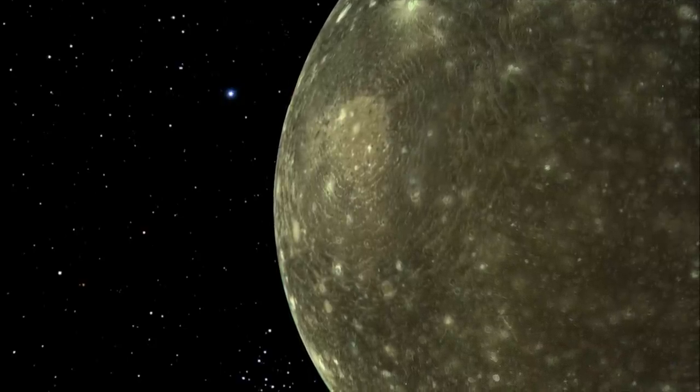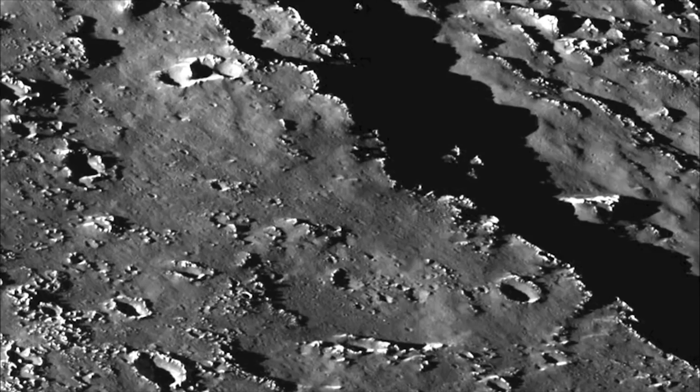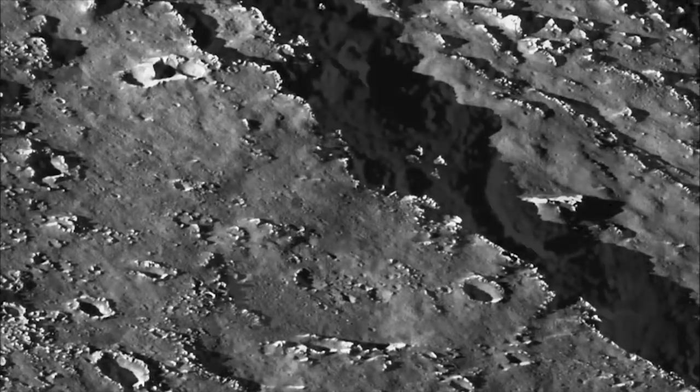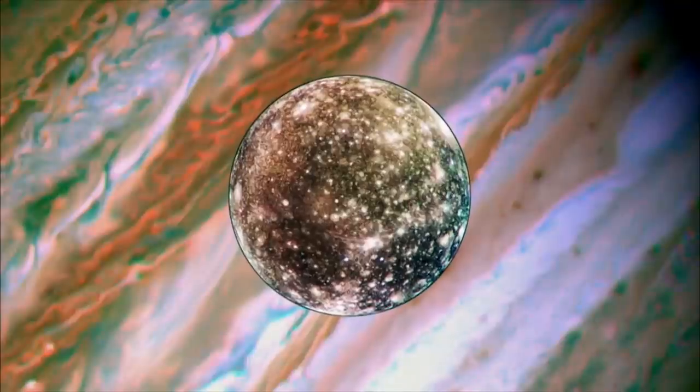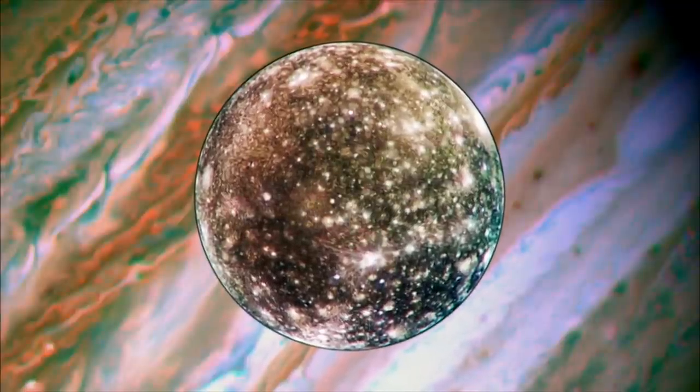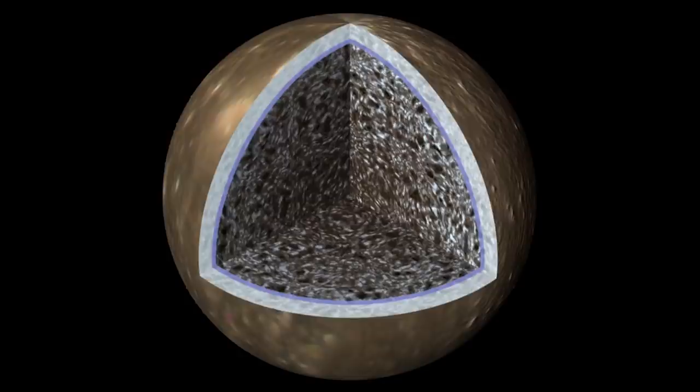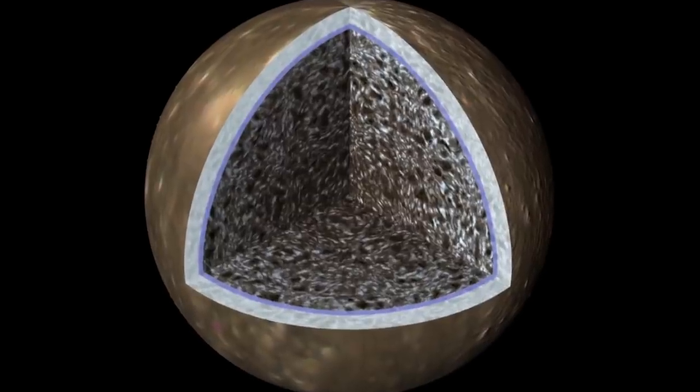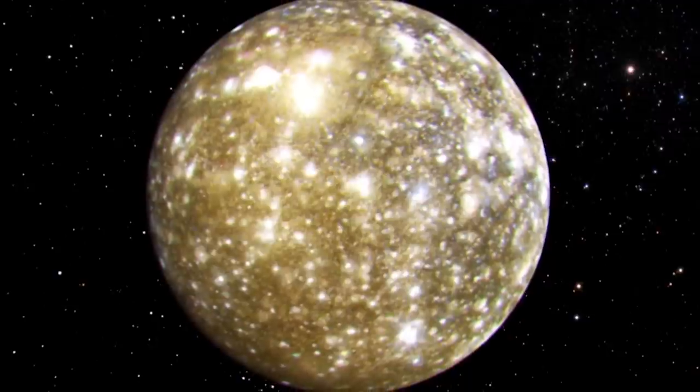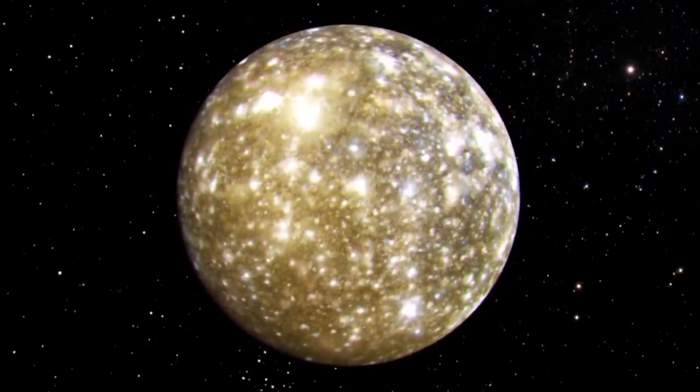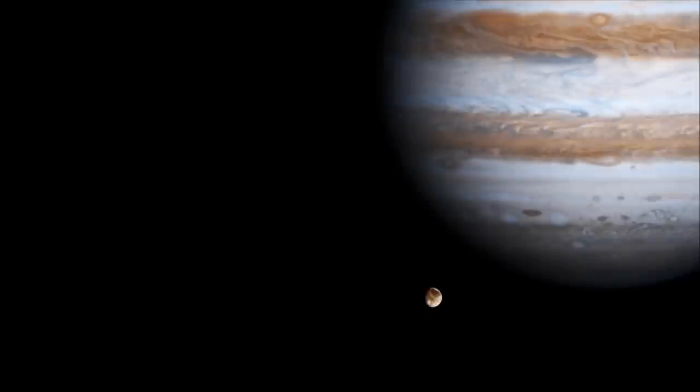While this makes for a dynamic surface, it is not particularly hospitable to life. Jupiter's outermost large moon Callisto couldn't be more different. Callisto's battered face is saturated with ancient impact craters. The most recent data suggests there could be a zone of salty water somewhere deep below Callisto's surface of ice and rock.